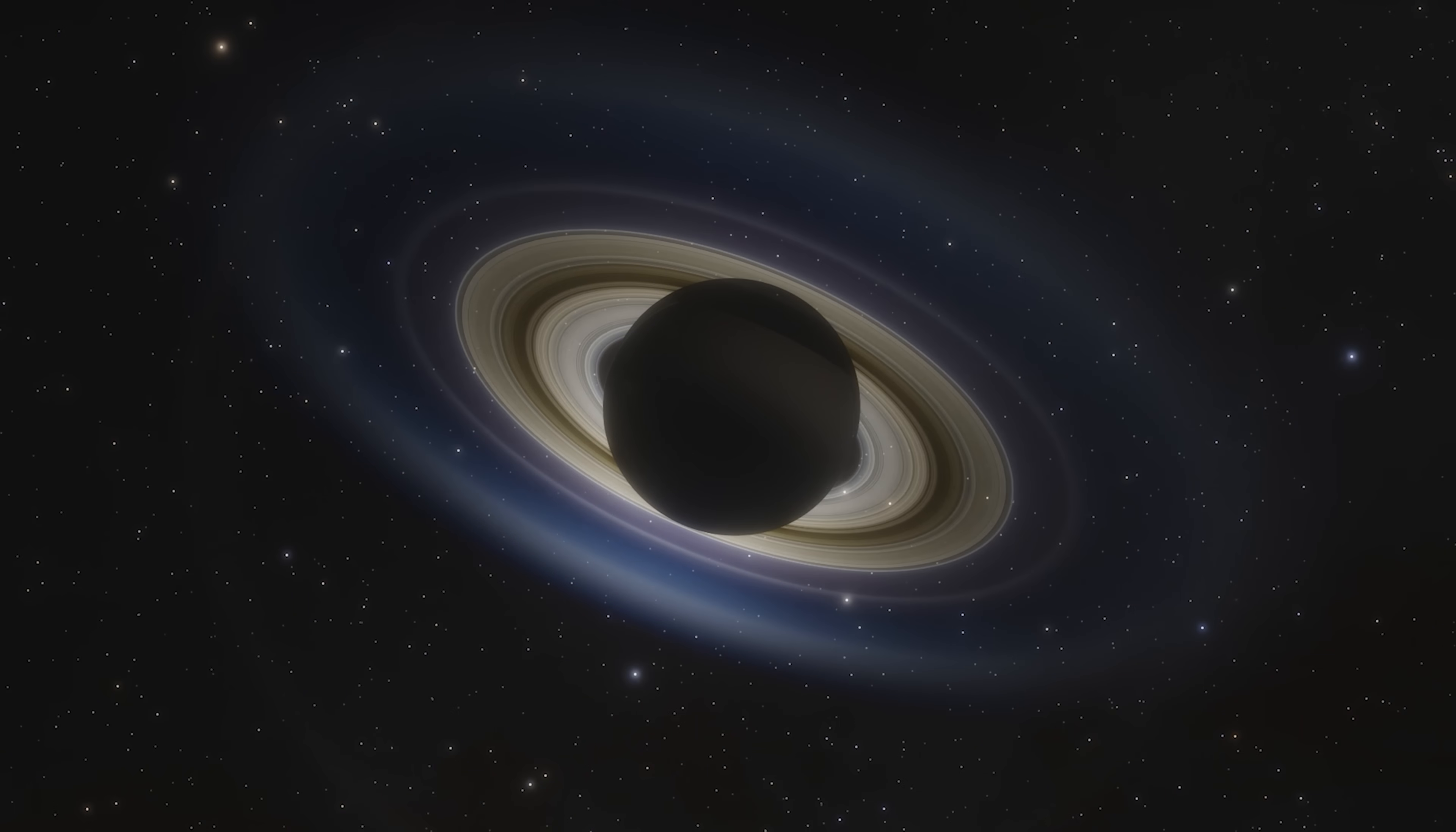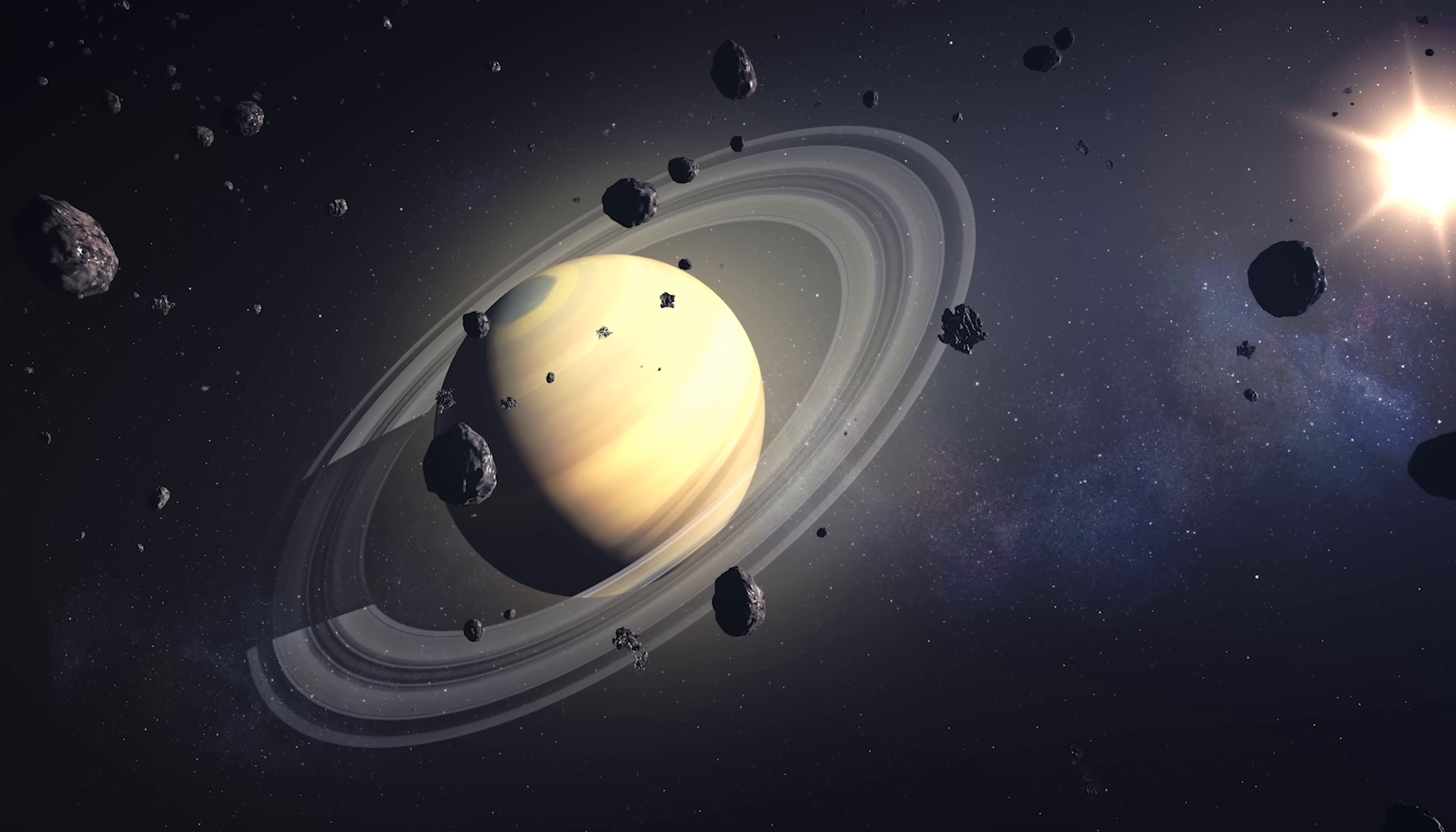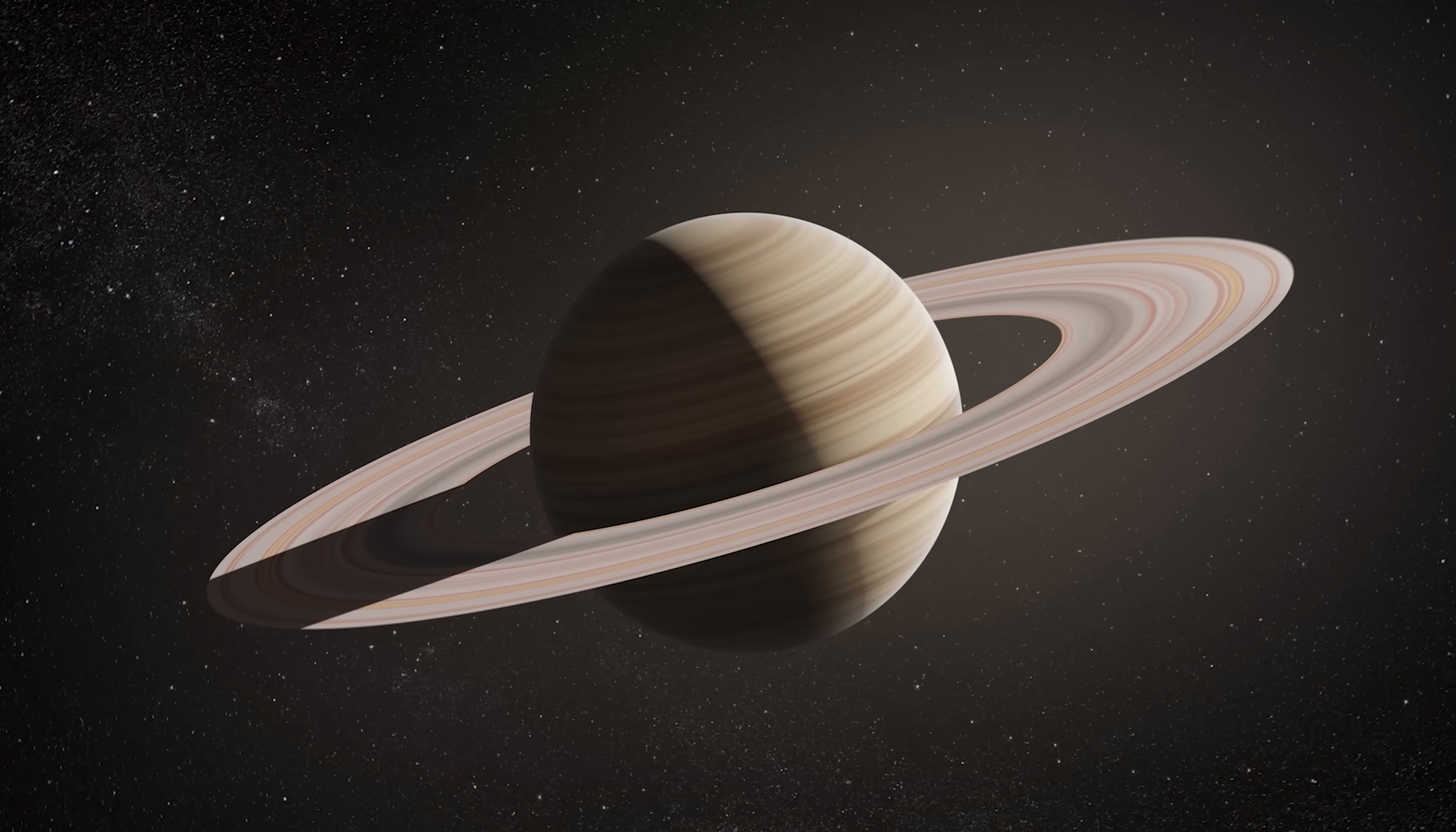But why does Saturn look so good compared to the others? First, its rings are enormous. They extend for hundreds of thousands of miles but are only tens of yards thick. Secondly, they're composed mainly of water ice, which reflects sunlight very well. Third, they're incredibly dense and structured, with thousands of concentric rings separated by divisions, created by the gravity of its moons. But next time you look at Saturn in a photo or through a telescope, remember it's not the only married planet, it just has the most flashy wedding ring.